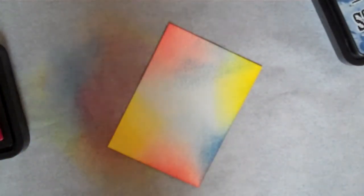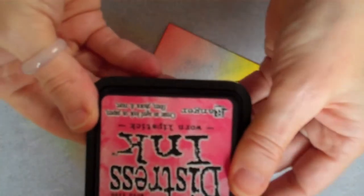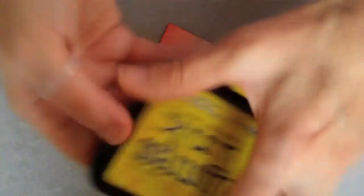Okay, so the three colours I've used there. The Distress Inks is Worn Lipstick, Faded Jeans, and Mustard Seed.